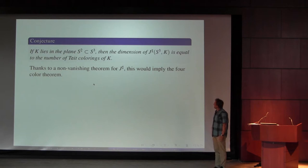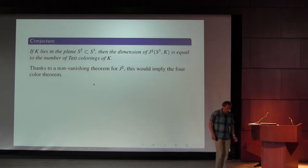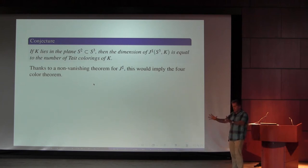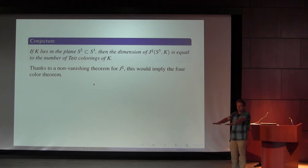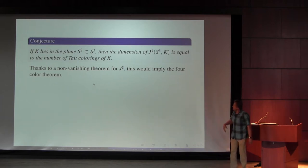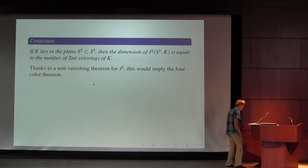If the conjecture is true, that would provide an alternative proof of the four-color theorem, because there's a rather strong non-vanishing theorem for J-sharp. A graph is called spatially bridgeless. In graph theory there's a notion of a bridgeless graph — a graph where if you remove an edge it becomes disconnected. There's a natural generalization to graphs in three-space that notices the embedding: the graph is bridgeless if there's no two-sphere that meets the graph transversely at one point in an edge.